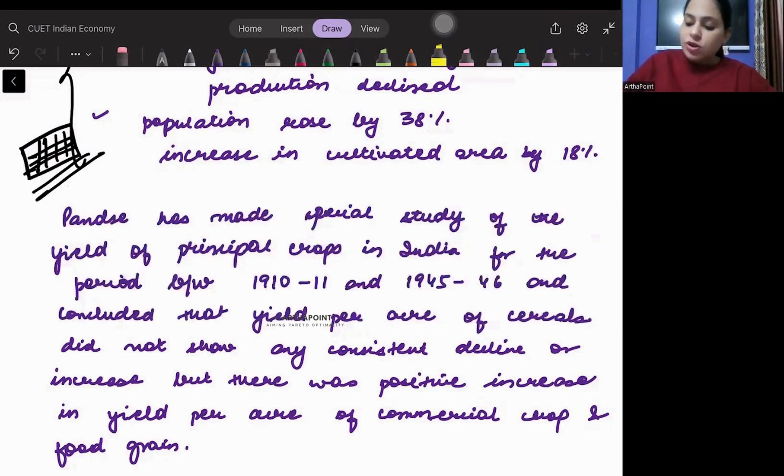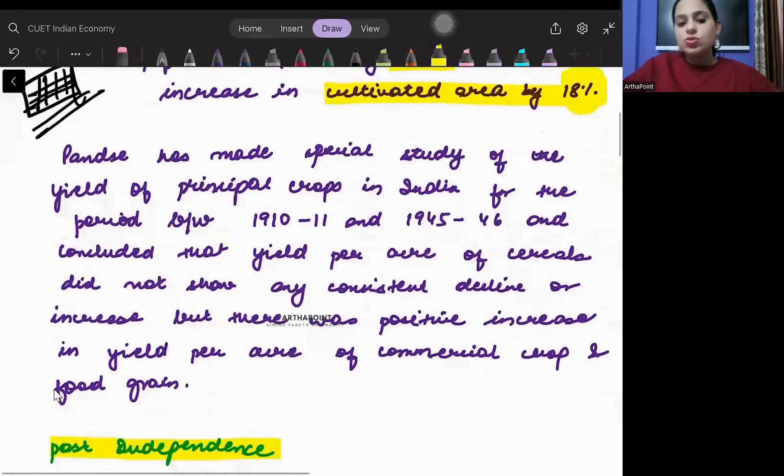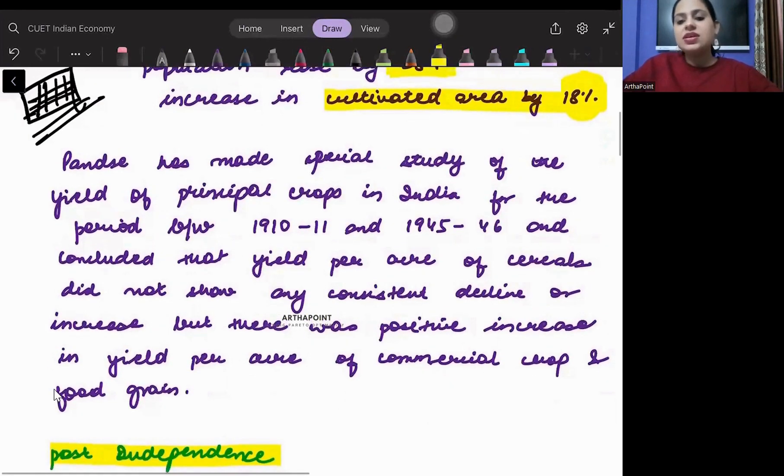Now what we see is that population has increased by a higher percentage and the cultivated land has only increased by 18%. There is another thing that we want to focus on, and this was a study which was done by Panse.